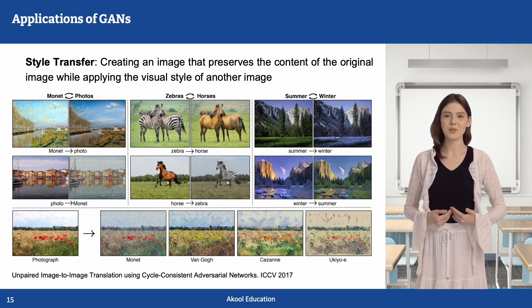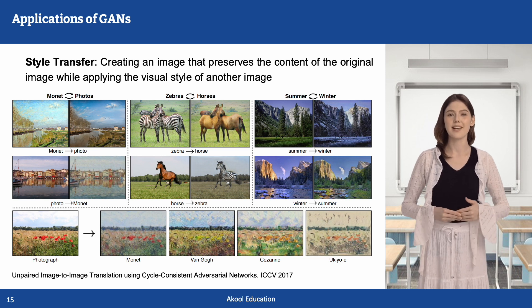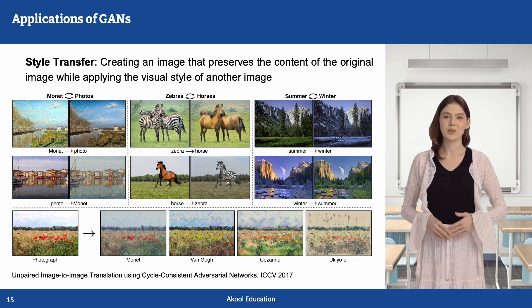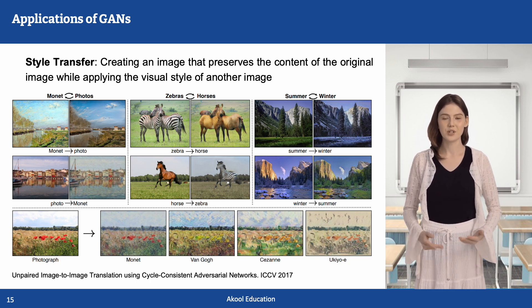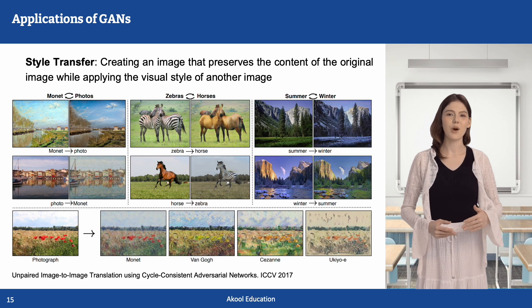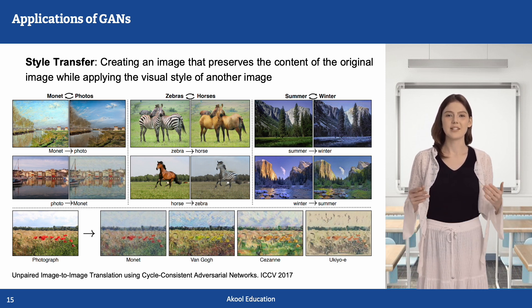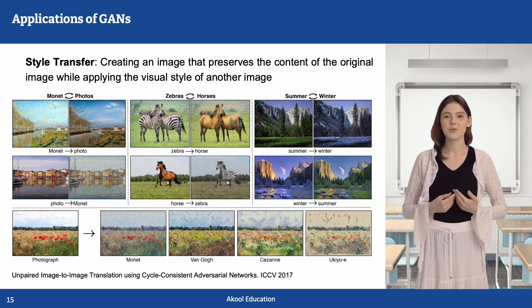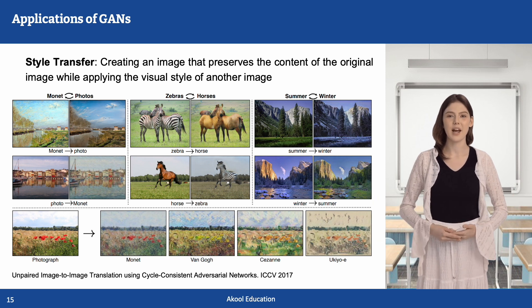GANs can also be used for style transfer, transforming paintings into realistic images and vice versa. Given two unpaired datasets, each containing one style of images, CycleGAN is a groundbreaking unsupervised image-to-image translation framework that allows for high-quality transformations between domains without paired data. By ensuring cycle consistency and adversarial training, it achieves realistic and meaningful modifications in images, making it a powerful tool for artistic style transfer.